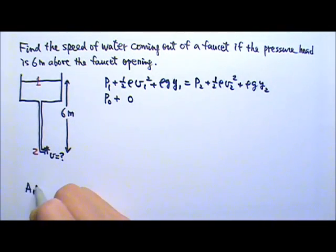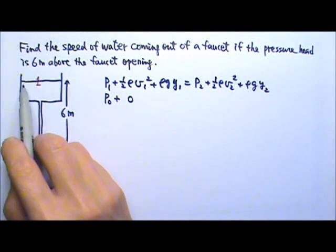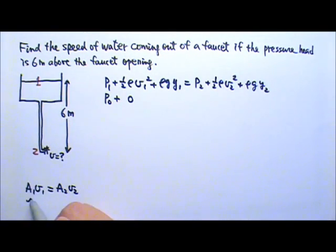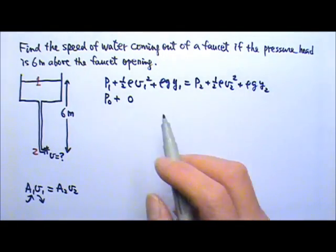Another way to look at this is A1V1 equals A2V2. The cross sectional area over here is very big, much bigger than A2. So the V1 is much smaller which is going to be negligible.